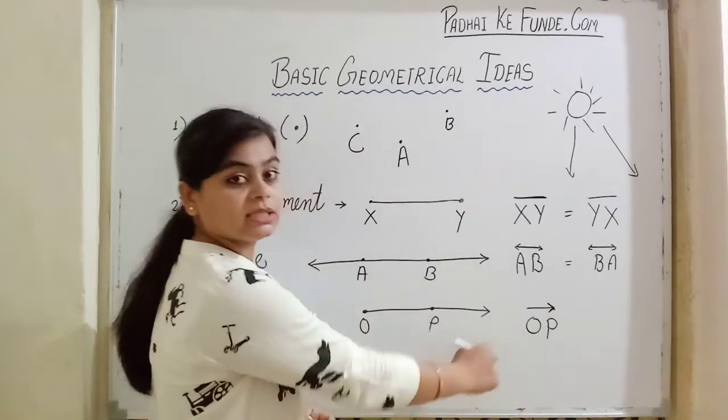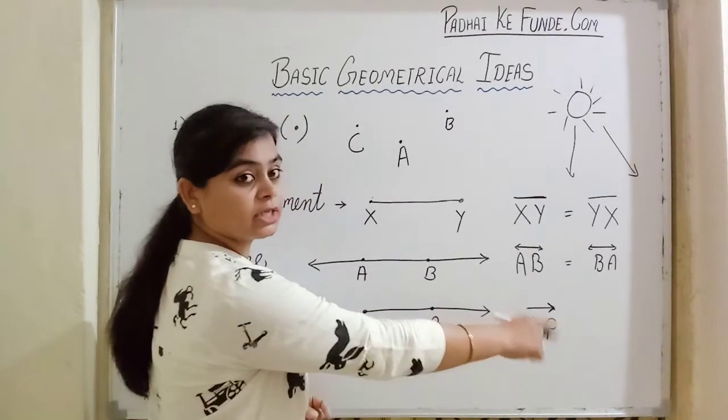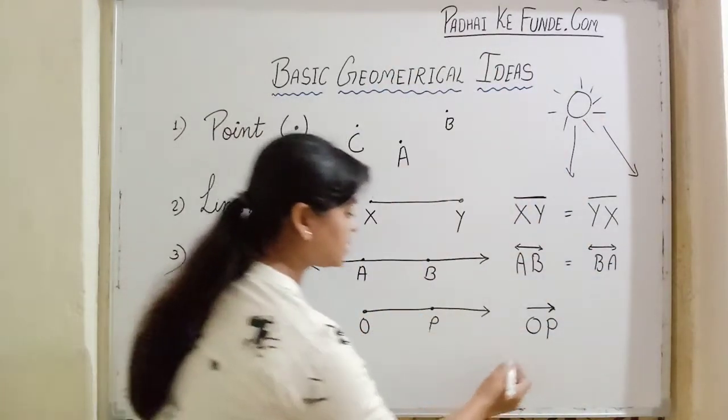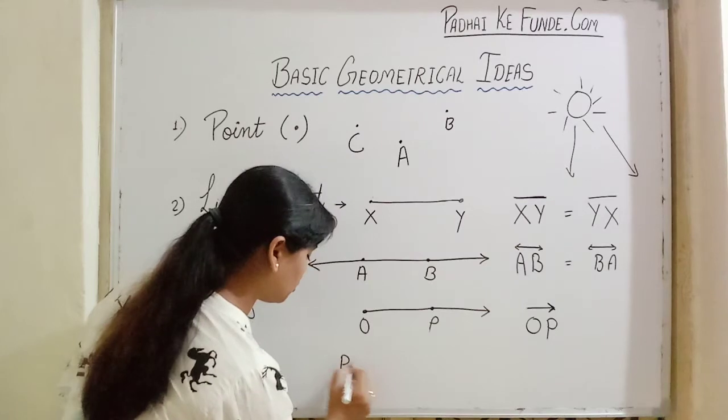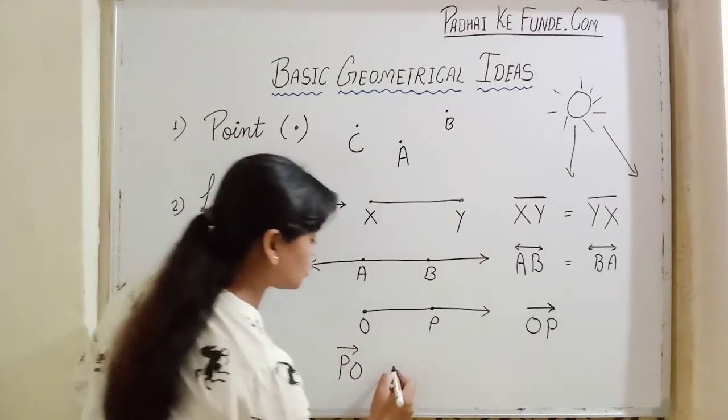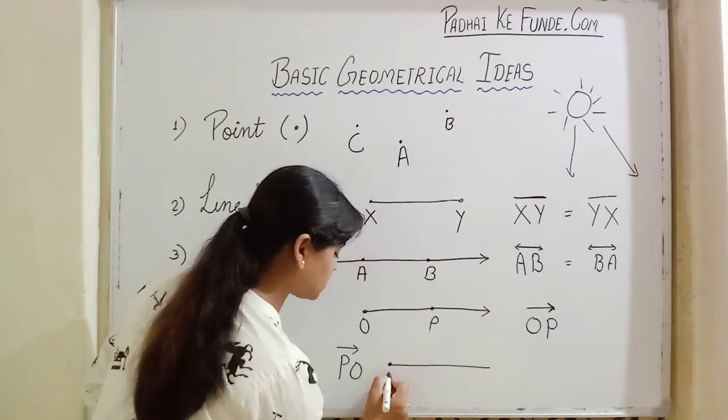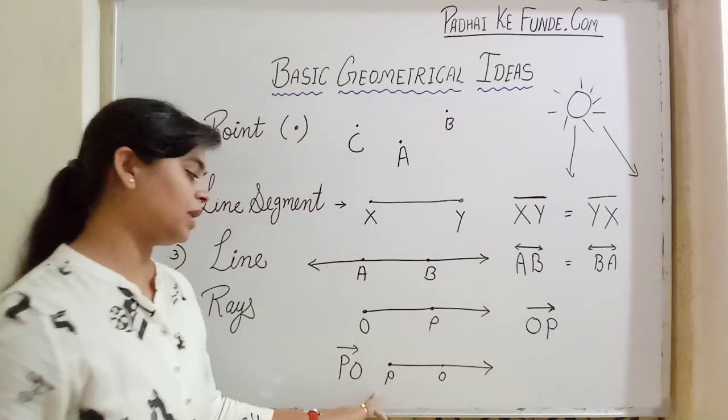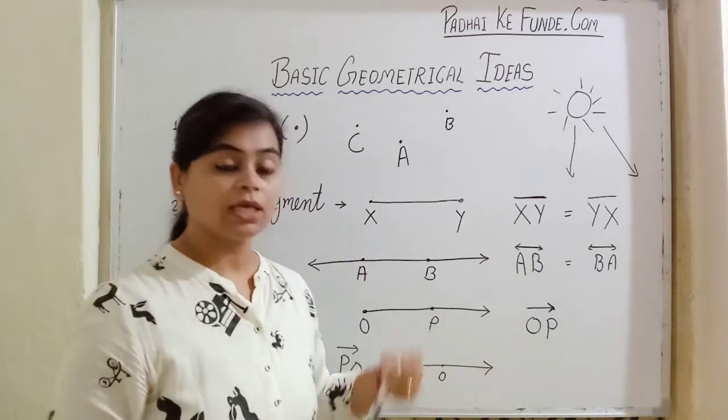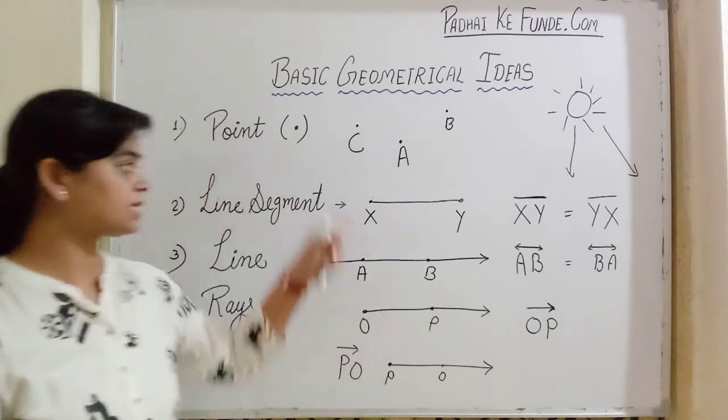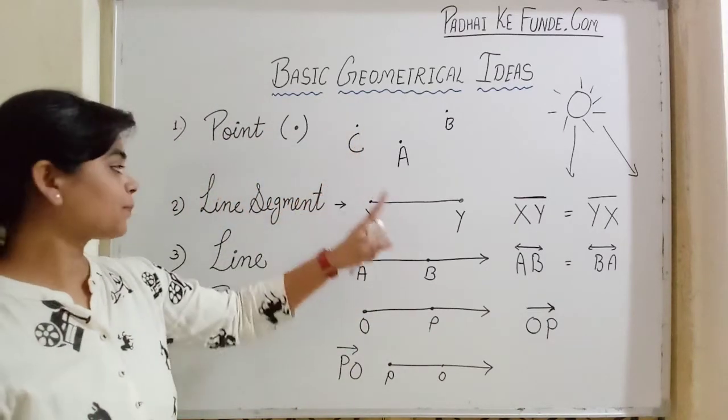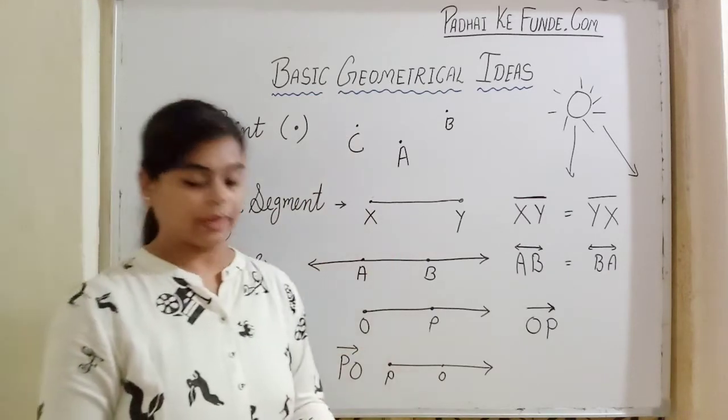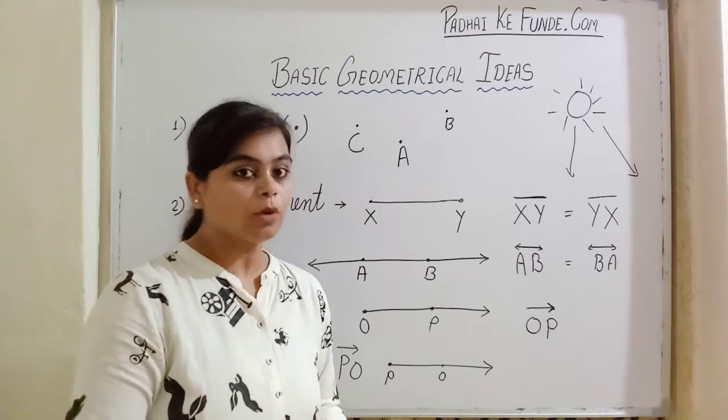Ray OP means it's starting from O and towards P, it is moving further. If I write it as ray PO, I need to draw it like this - P, O, and from P towards O it's moving. This is the way to write the name of these things - how we represent a point, a line segment, a line, and a ray.